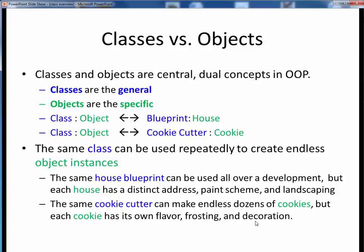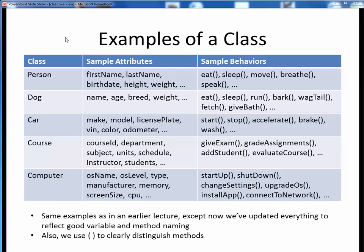Now, usually at this point in my on-ground course, I like to bring out a plastic bin full of cookie cutters and then several boxes of Girl Scout cookies as visual aids to drive this point home. But alas, I can't do that here. Sorry. This table shows various examples of possible Java classes. For each class name on the left, several possible attributes and descriptions are shown. You as a designer might choose different attributes and behaviors, but these are just given for illustration. None of these are absolutes.